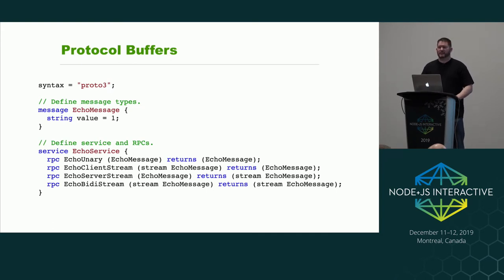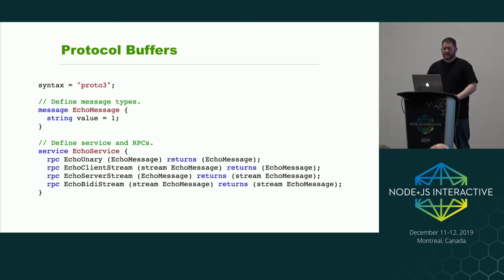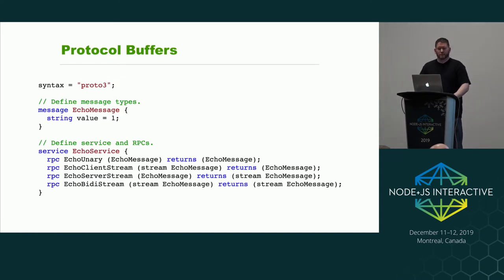Coming back to protocol buffers — you'll basically write a file describing your service and the messages it's going to send back and forth, saved as a .proto file. The first line is 'syntax = proto3'; protocol buffers are versioned so this defines which version you're using. We then define a message type — for an echo server, we define a message called EchoMessage with one field named 'value' of type string. This is important for serialization so both sides know how to unpack the data.